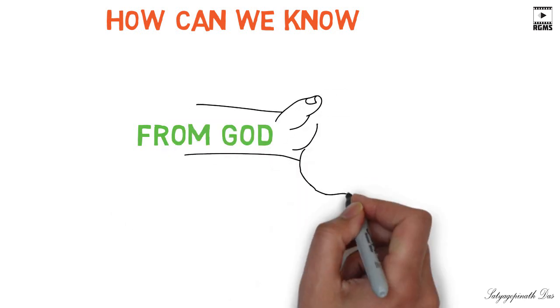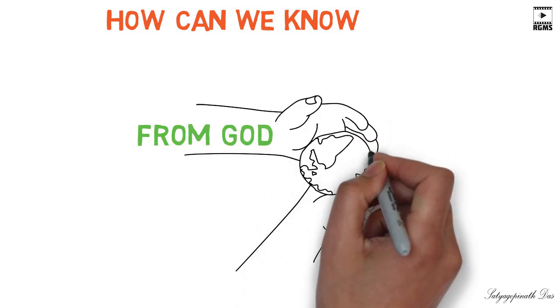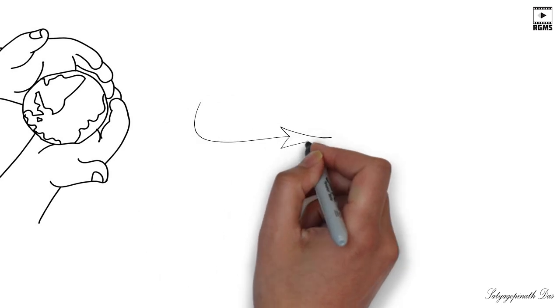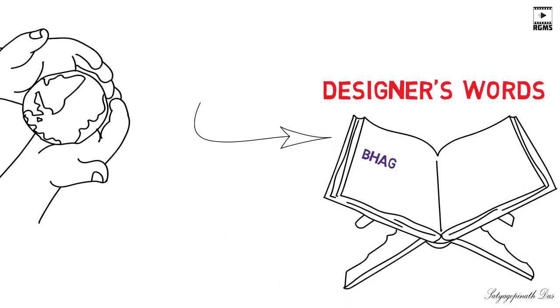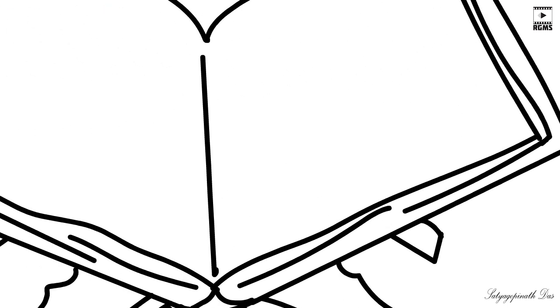Therefore, for knowing the purpose of this world, logically we should turn to the designer's words—the God-given scriptures like the Bhagavad Gita. These scriptures inform us that this world is meant primarily to serve as a transitional curative place, something like a hospital.